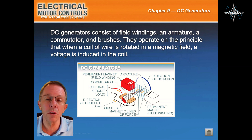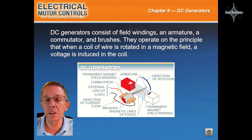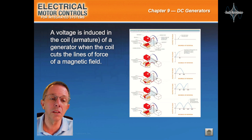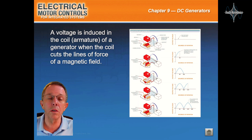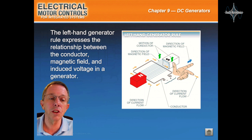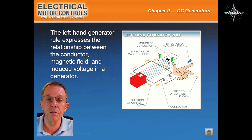They operate on the principle that when a coil of wire is rotated in a magnetic field, a voltage is induced in the coil, or armature, of a generator when the coil cuts through the lines of force of a magnetic field. The left-hand generator rule expresses the relationship between the conductor, magnetic field, and induced voltage in a generator.